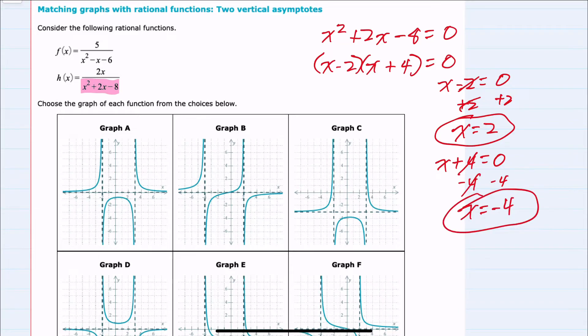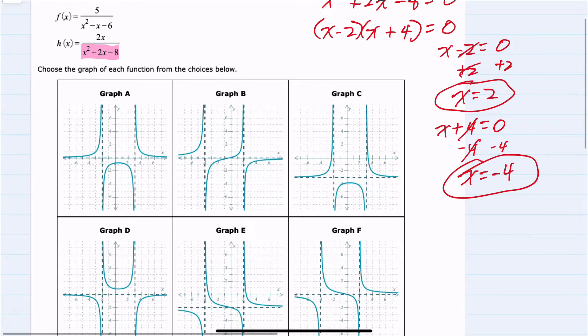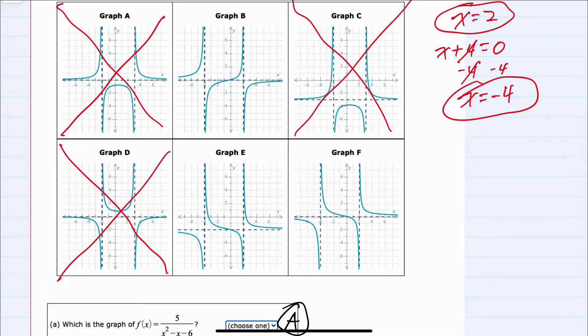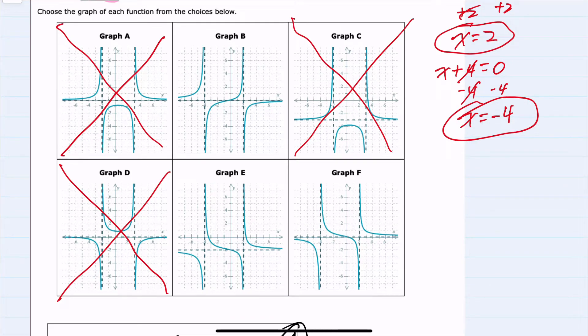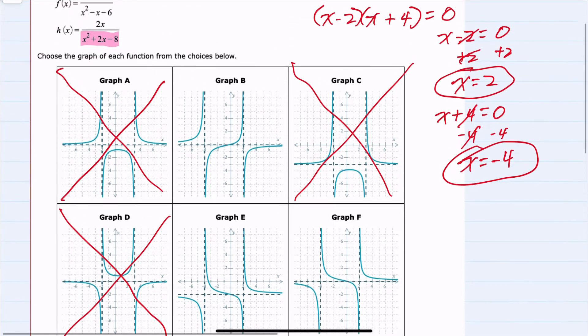So as before, I'm just going to do some elimination. We know our vertical asymptotes should be negative four and two. So I can eliminate a, c, and d. We've eliminated half of the graphs just looking at the vertical asymptotes.